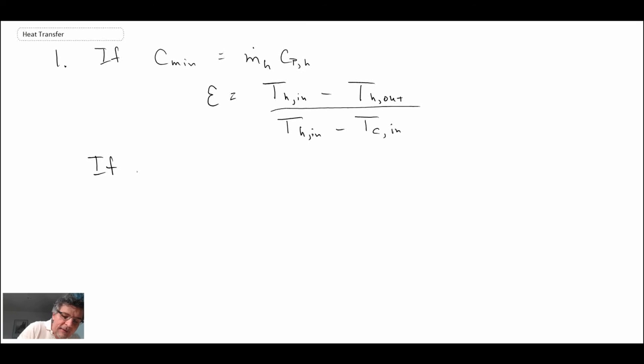And if the minimum fluid turns out to be the cold fluid, then the effectiveness is determined with a different equation. Okay, second step: we determine the value of CR.